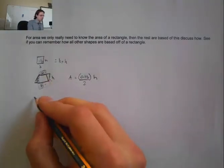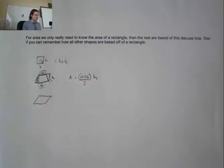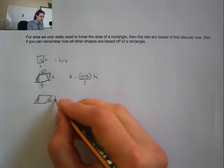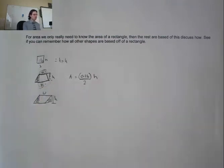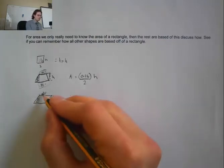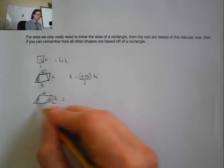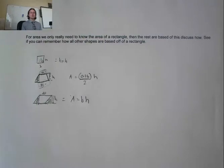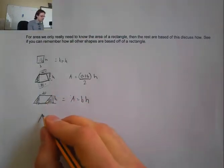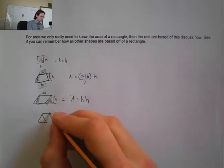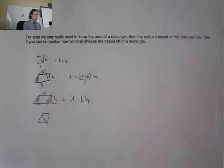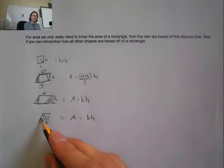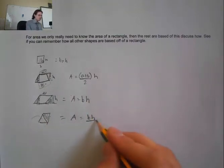A parallelogram looks like this. If I cut this piece off and put it here, now we have a rectangle with height h. The width or base stays the same, so the area is still base times height. For a triangle, if I add the same triangle to it, I end up with a parallelogram. The area of a parallelogram is base times height, but we only want half because the triangle is half of it, so area = base times height divided by 2.